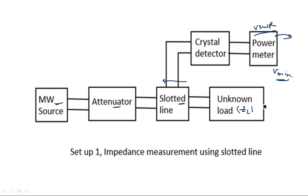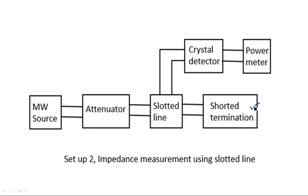The first step is complete. In the second step, we short circuit the load. We remove the unknown load ZL and replace it with a short circuit termination — actually a matched termination connected to the slotted line. This signal will be absorbed at the matched termination, which has impedance equal to the characteristic impedance of the transmission line. The rest of the bench setup — microwave source, attenuator, slotted section carriage, probe carrier, and VSWR meter — remains the same.